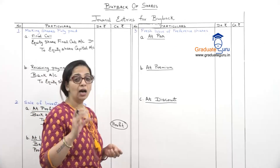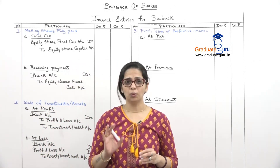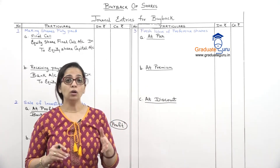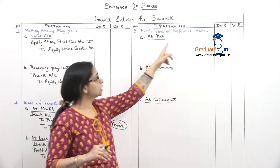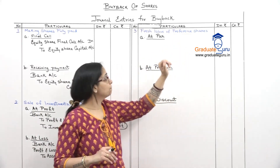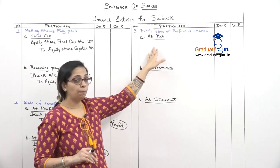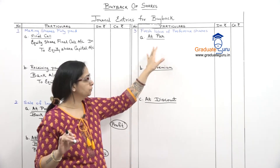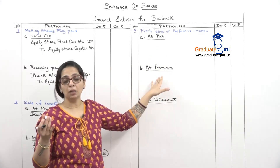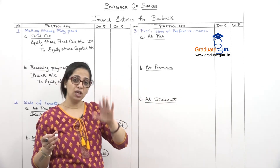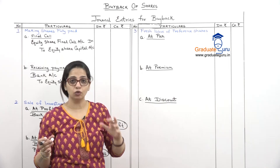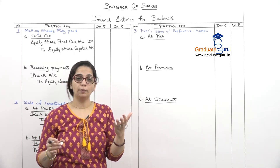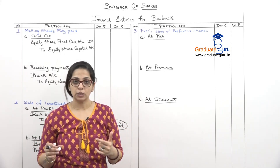Now we are always going to assume that we are buying back equity shares — in all our sums we will always buyback equity shares. So what will the fresh issue be? It will obviously be of preference shares. Now the fresh issue can be at par, meaning face value — for example, a 10-rupee share issued at 10 rupees. Or it will be at premium, more than the face value — so a 10-rupee share maybe issued for 12 rupees. Or at discount, meaning lesser value — so a 10-rupee share issued at 8 rupees.